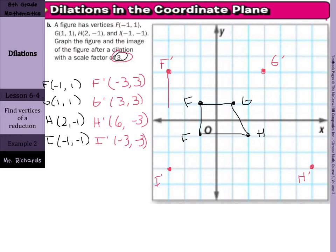Since we multiplied by a number bigger than 1, we should expect an enlargement. And that's exactly what we have. We multiplied by a factor of 3, so we have something that's 3 times bigger.